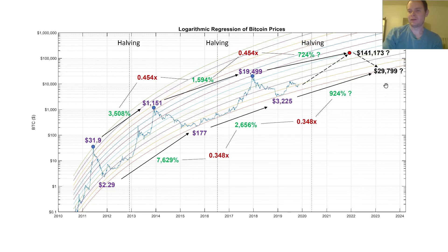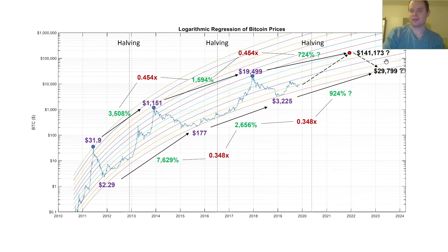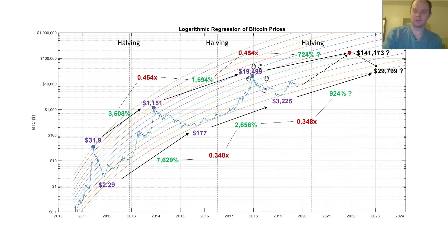That would put the next bear market bottom at around $30,000. I think that would be somewhat realistic, because the peak over here was $1,151, which was still lower than the bottom of two bear markets later. So the ultimate capitulation area of the next bear market would still be higher than the peak of the previous two bull runs — essentially, $19,491 up to around $30,000 from here to here.